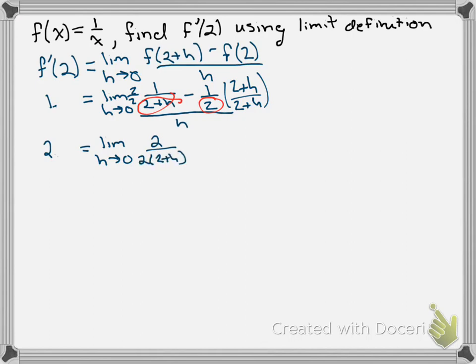minus 2 plus h over the quantity 2 times the quantity 2 plus h. And then this whole thing, as we remember, is still all completely over h. And there's the end of step 2.